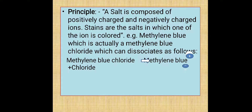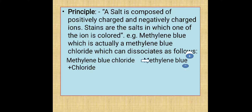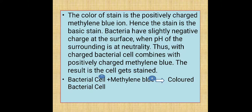Principle: as a salt is composed of positively charged and negatively charged ions, stains are salts in which one of the ions is coloured. For example, Methylene Blue is actually Methylene Blue chloride, which dissociates into Methylene Blue (positive charge) and chloride (negative charge). The colour of the stain is the positively charged Methylene Blue ion; hence the stain is a basic stain. Bacteria have a slightly negative charge at the surface when the pH of the surroundings is at neutrality. Thus, the charged bacterial cell combines with positively charged Methylene Blue, resulting in the staining of the bacteria.